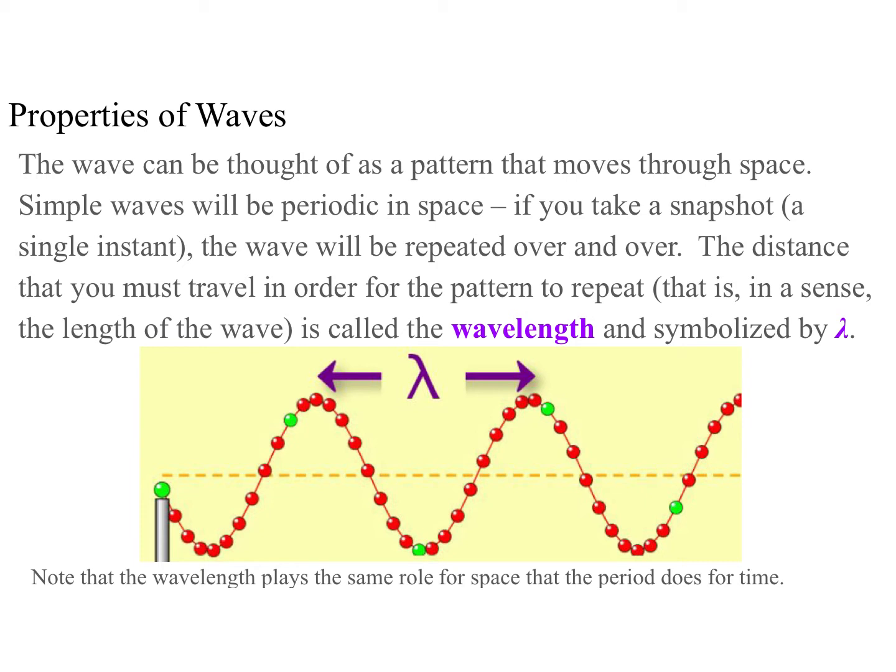Notice that wavelength in English is one word, even though wave speed, for instance, is not. There's no good reason for that. It's just the way it is. Notice that in this case, the wavelength plays the same role for space that the period has played for time.